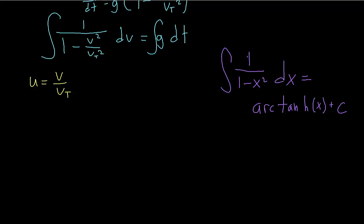We just have to do a quick u substitution, where we make u the velocity over vt. So that way, we have an integral of the form one over one minus u squared. And then we can use this integration identity.